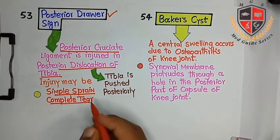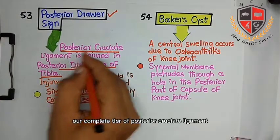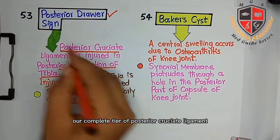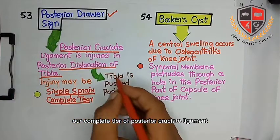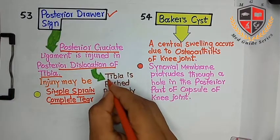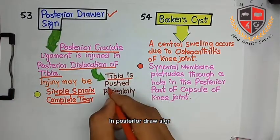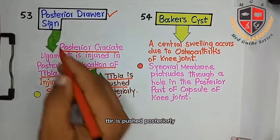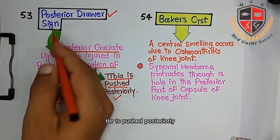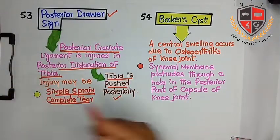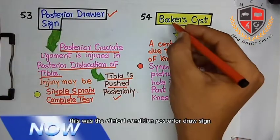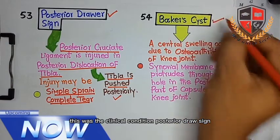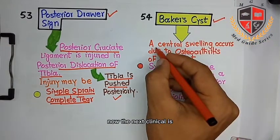The next clinical is posterior drawer sign. The posterior cruciate ligament is injured in the posterior dislocation of tibia; the injury may be a simple sprain or complete tear of the posterior cruciate ligament. In the posterior drawer sign, the tibia is pushed posteriorly.